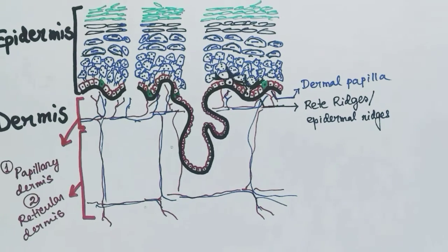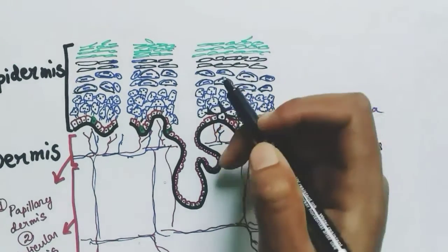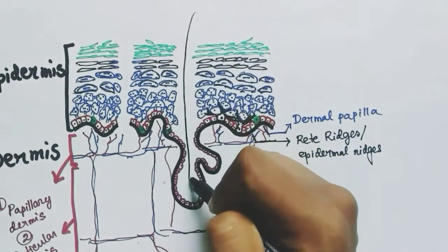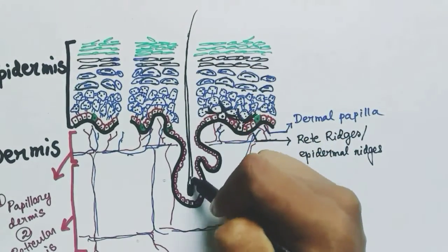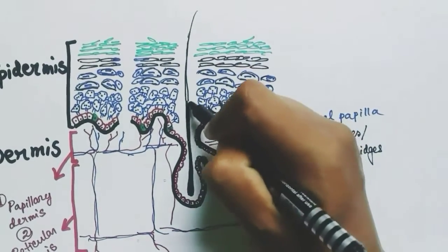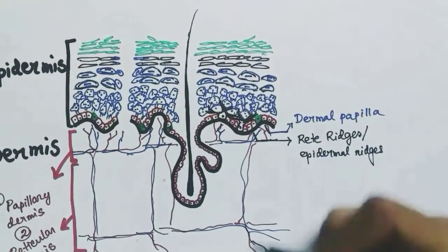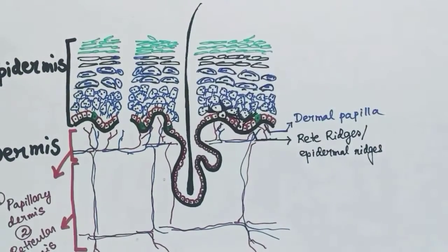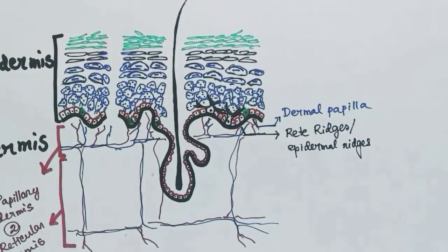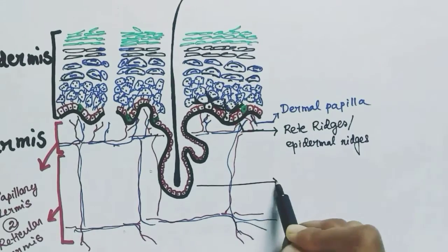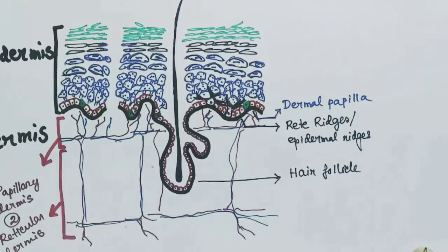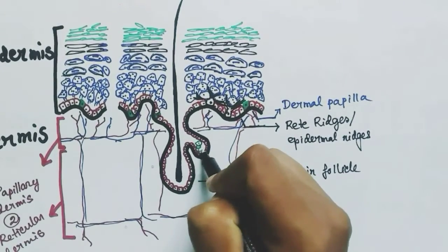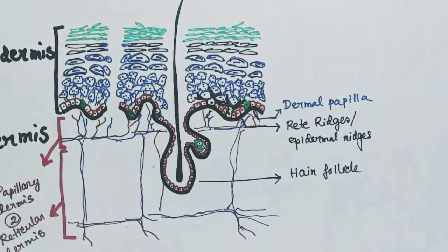This is a body hair which has its hair follicle in the dermis region. The hair follicle is present in the dermis. The second component of the dermis is the sebaceous gland.